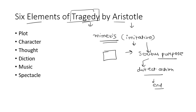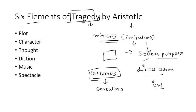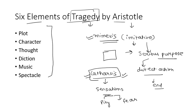The aim of tragedy is to bring about catharsis. Catharsis means to arouse sensations — for example, if we are seeing an emotional act and we start crying, that can be considered catharsis. Catharsis of the spectators means to arouse in them sensations of pity and fear, so that they can connect with that particular act.